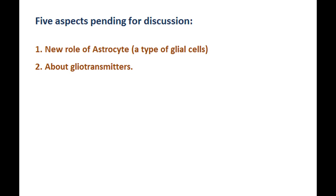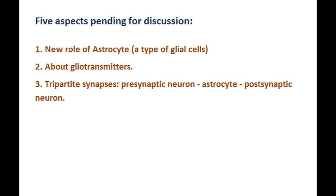Bi-directional communication between astrocytes and neurons could lead to a more complex description of glial and neural networks. Experimental evidence is showing that astrocytes, with the release of gliotransmitters, can modulate local synapses with corresponding effects on brain activity. The different gliotransmitters would affect the synapse in a very diverse way, depending on the molecular characteristics of the neuronal membrane receptors and their exact location.